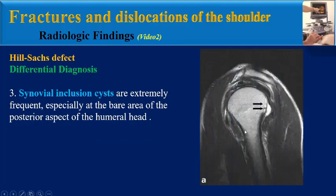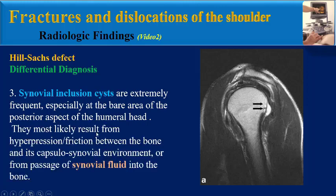Another differential diagnosis is synovial inclusion cysts, which are extremely frequent, especially at the bare area of the posterior aspect of the humeral head. On the articular surface of the humeral head is a posteriorly bare area located between the posterior insertion of the joint capsule and synovial membrane and the adjacent articular cartilage. The cysts most likely result from hyperprician friction between the bone and its capsulosynovial environment, or from passage of synovial fluid into the bone.